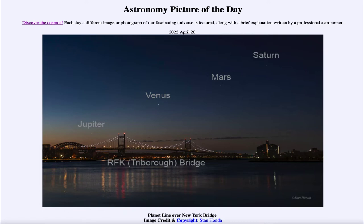Here we see off to the left the largest planet in the solar system, and that would be Jupiter. Then we see the brightest star-like object in the sky — so other than our sun and moon, Venus is the next brightest object. And then just up and a little fainter is the planet Mars. And then finally, to the upper right is Saturn.